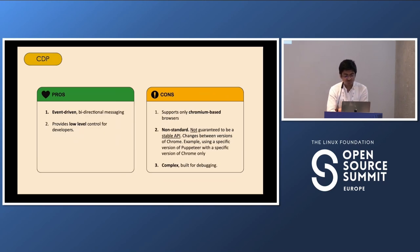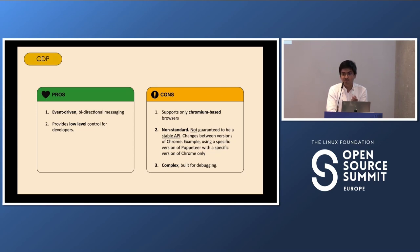In short, the pros of CDP: it is event-driven, has bidirectional messaging because of WebSockets, and provides low-level control for developers. The disadvantages: it is only supported by Chromium-based browsers; it is not a W3C standard and changes with every version of Chrome, so you need to ensure compatibility between your Puppeteer version and Chrome version. Lastly, CDP is complex — it is built for debugging, not for testing.